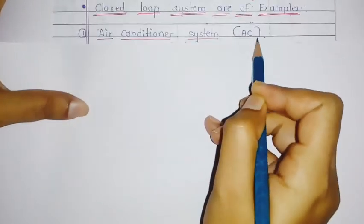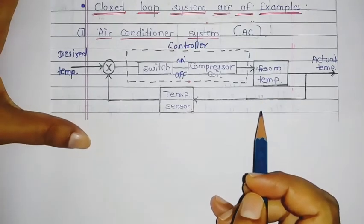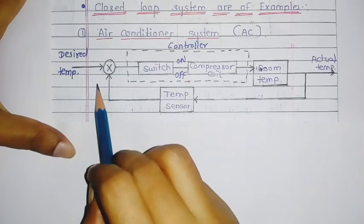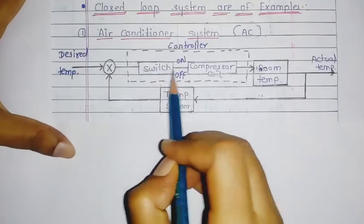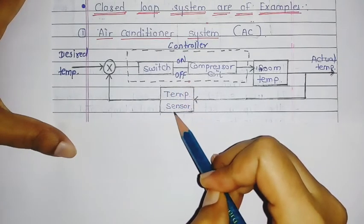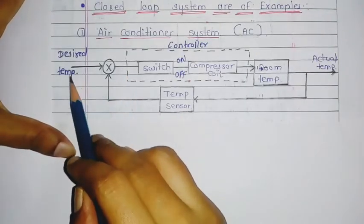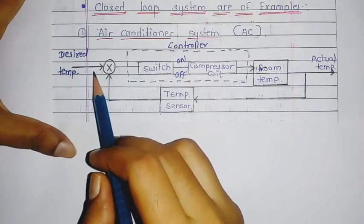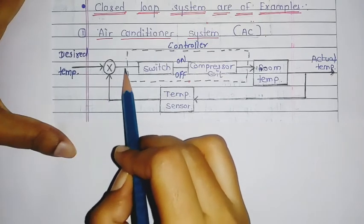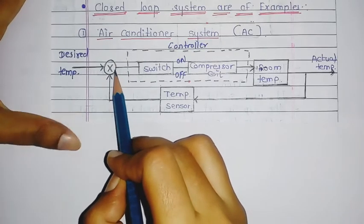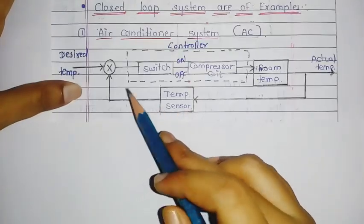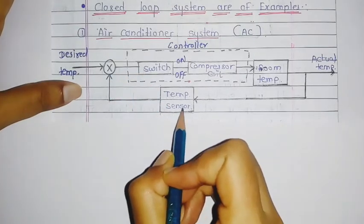This is the block diagram of the AC system. It consists of a switch, compressor coil, room temperature, and temperature sensor. The temperature sensor is the feedback of this system. The desired temperature is given to the comparator.